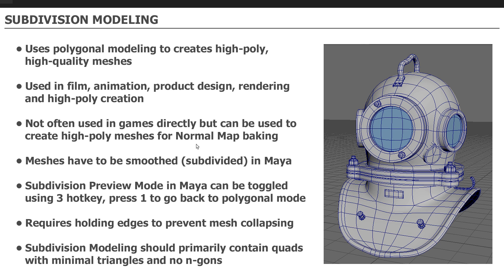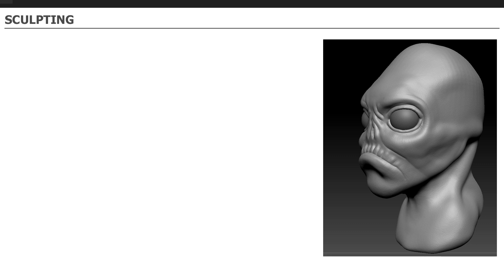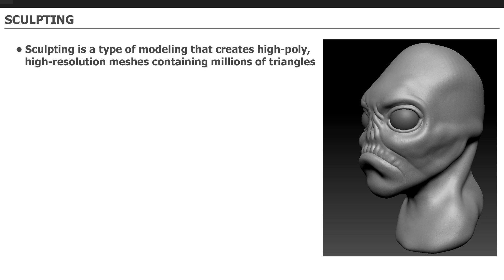The third modeling method is sculpting. Technically sculpting is not modeling, but your sculpted mesh does contain triangles, so it is a 3D mesh. Sculpting is a very important part of the production pipeline for creating game environment assets. Sculpting creates high poly, high resolution meshes containing millions upon millions of triangles. These meshes are not used directly inside the game engine. While UE5 Nanite allows importing very dense sculpted meshes, we are sticking with the proven pipeline that has been used for the last 10-15 years.